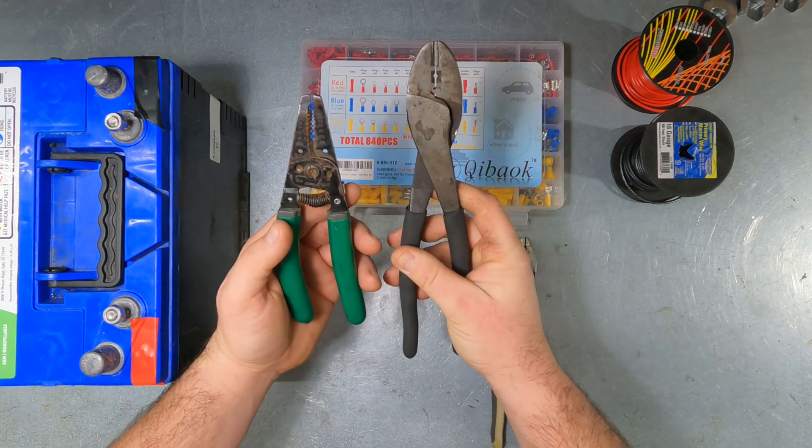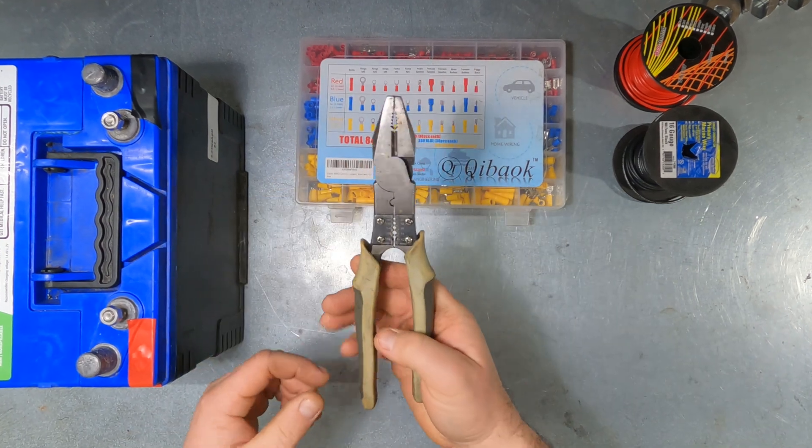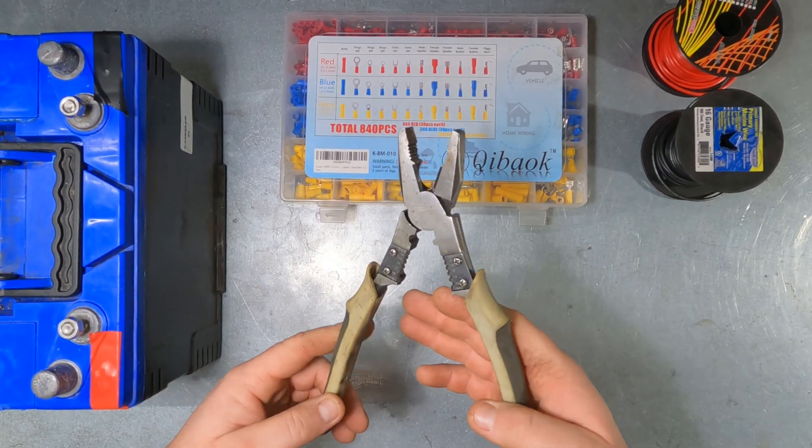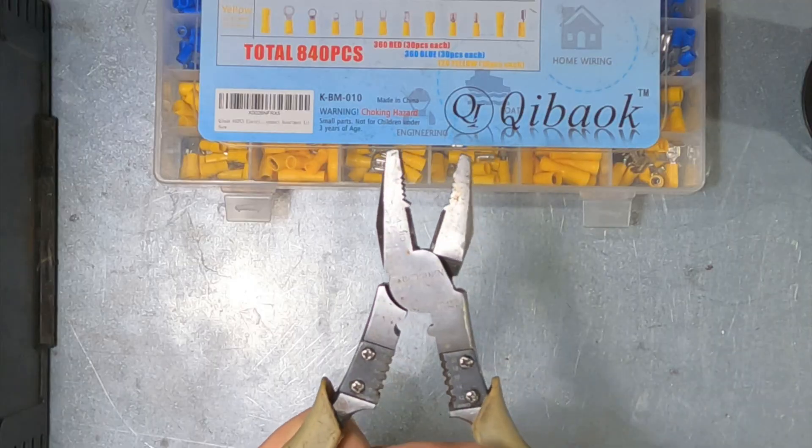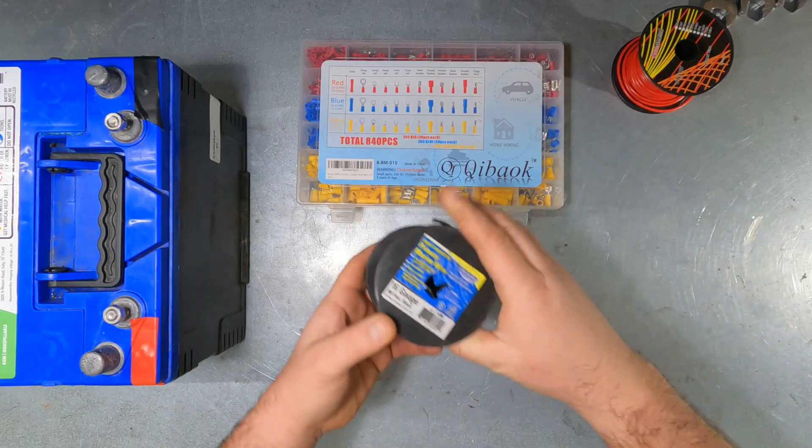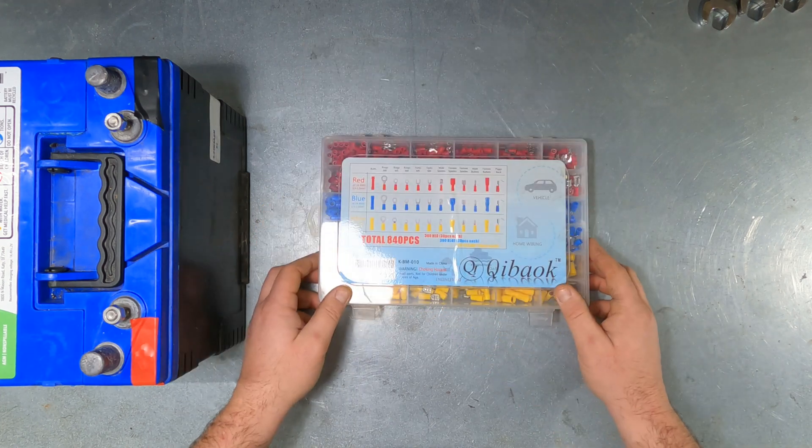Then strippers and crimpers. I can put a link to these down in the description. This is kind of an all-in-one tool I like to use. I carry these everywhere, and it has strippers, crimper, pliers, cutters, all in one. Then of course, some wire. Let's get to it.